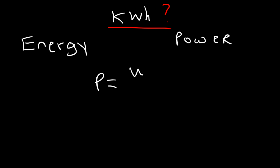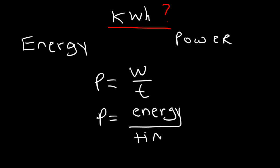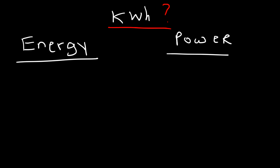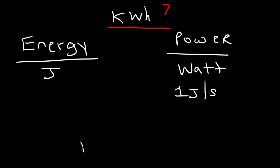Power is defined as work divided by time, and work is the transfer of energy, and energy is the ability to do work. So you can think of power as being the amount of energy transferred per unit time. The units for energy are units such as joules — that's the most common unit of energy you'll encounter. The unit for power is the watt.